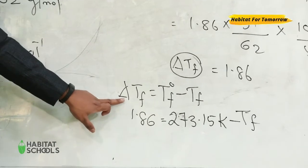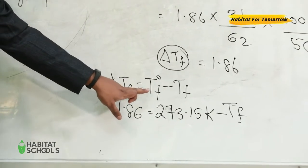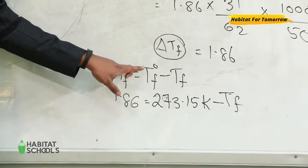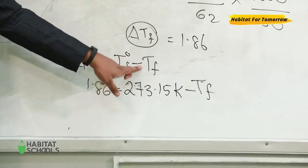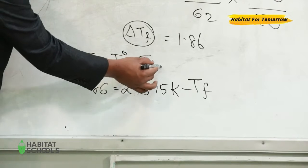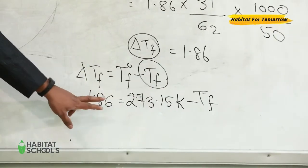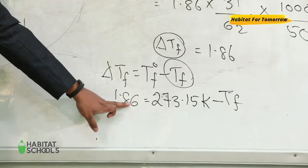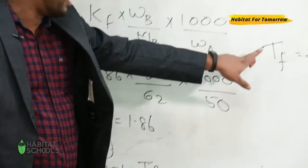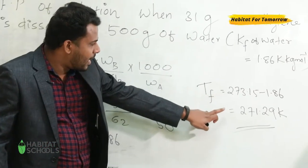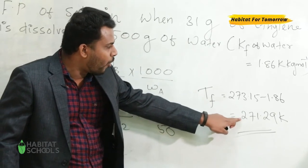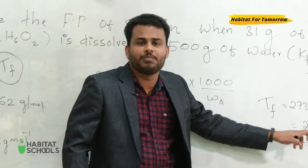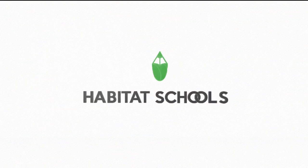We know the depression in freezing point is the temperature difference between the freezing point of the pure solvent and freezing point of the solution. So we want to calculate Tf, so we have to substitute, and on rearranging we will get the final answer. The freezing point of the solution is equal to 271.29 Kelvin. Thank you.